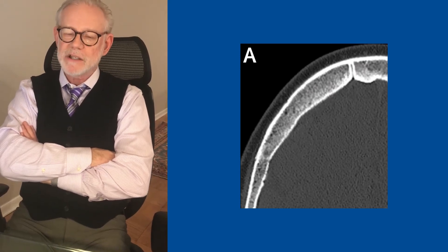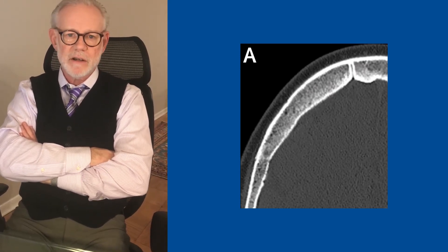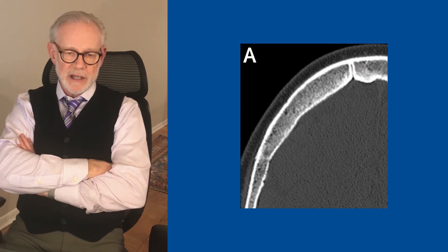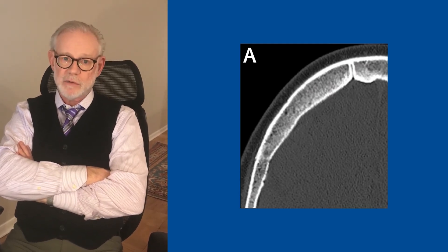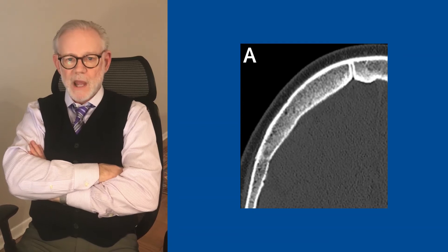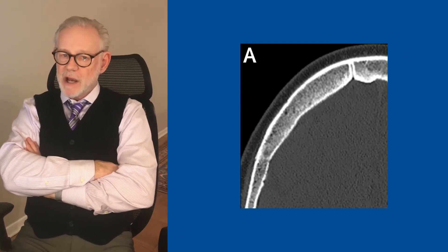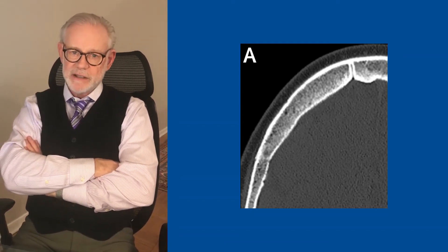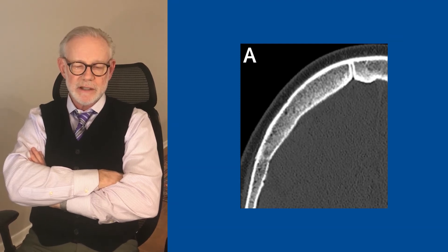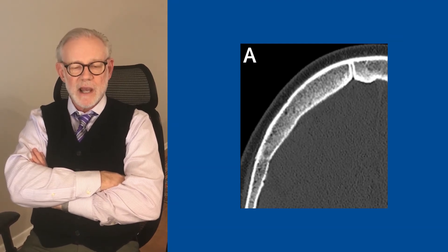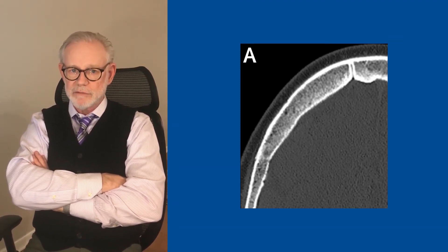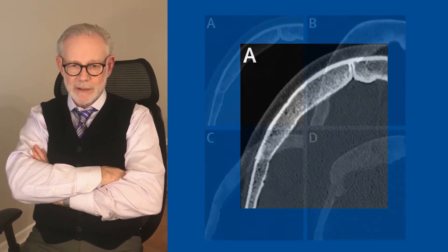However, it was reminiscent to us of other cases in which we had seen thickening of the calvarium in patients with disorders of PTH signaling. PTH binds to the PTH receptor, and through G alpha S and downstream cyclic AMP signaling, stimulates skeletal stem cells in the calvarium to proliferate, causing calvarium thickening.